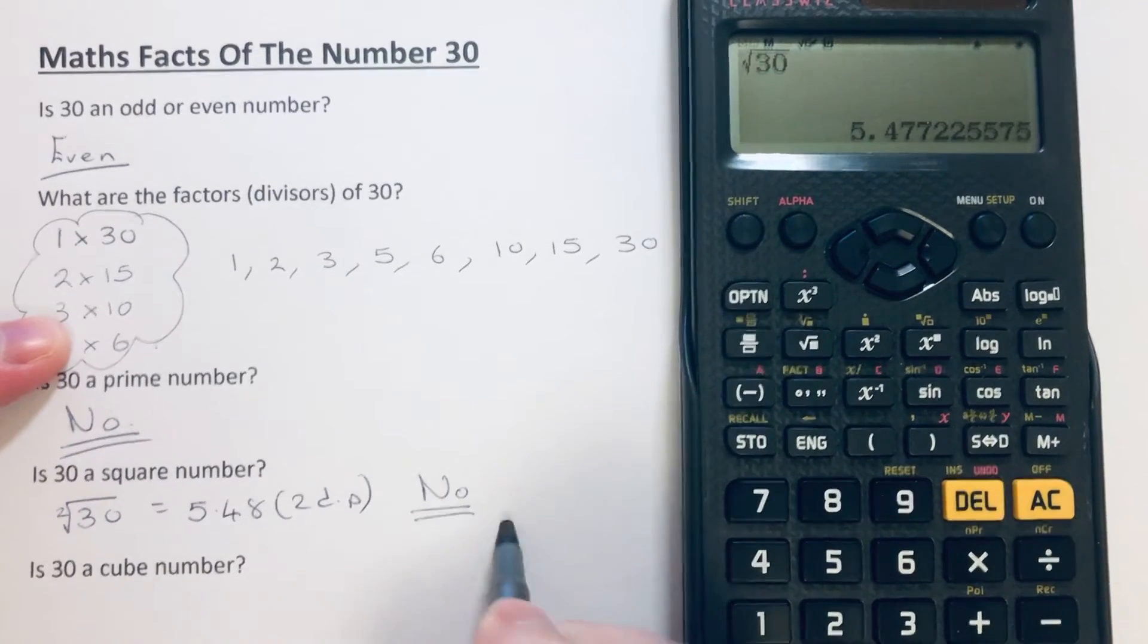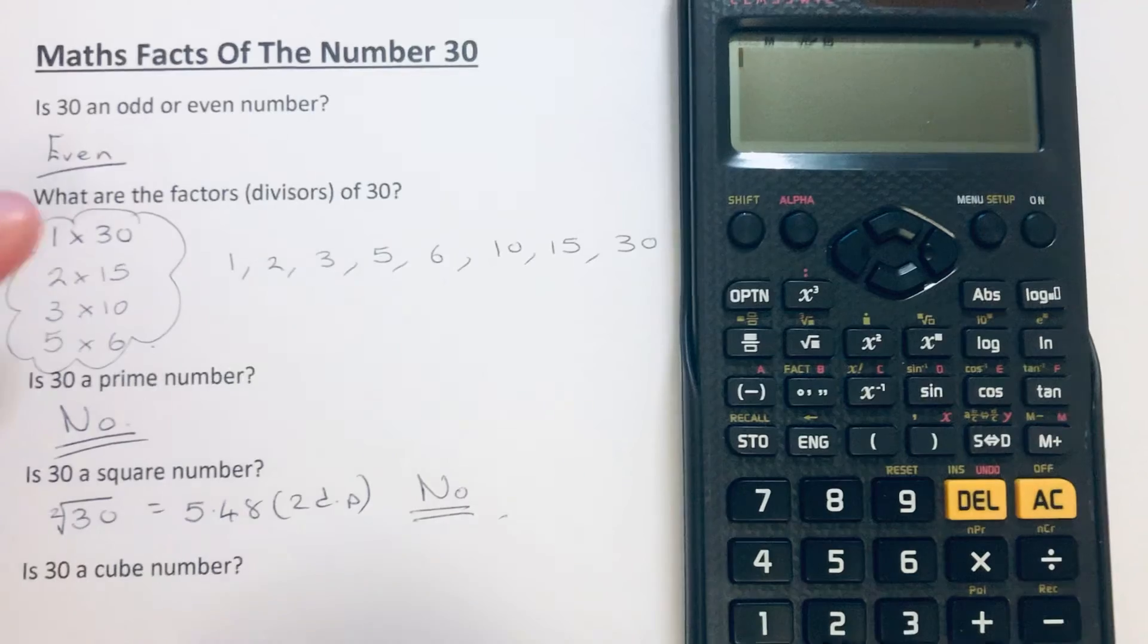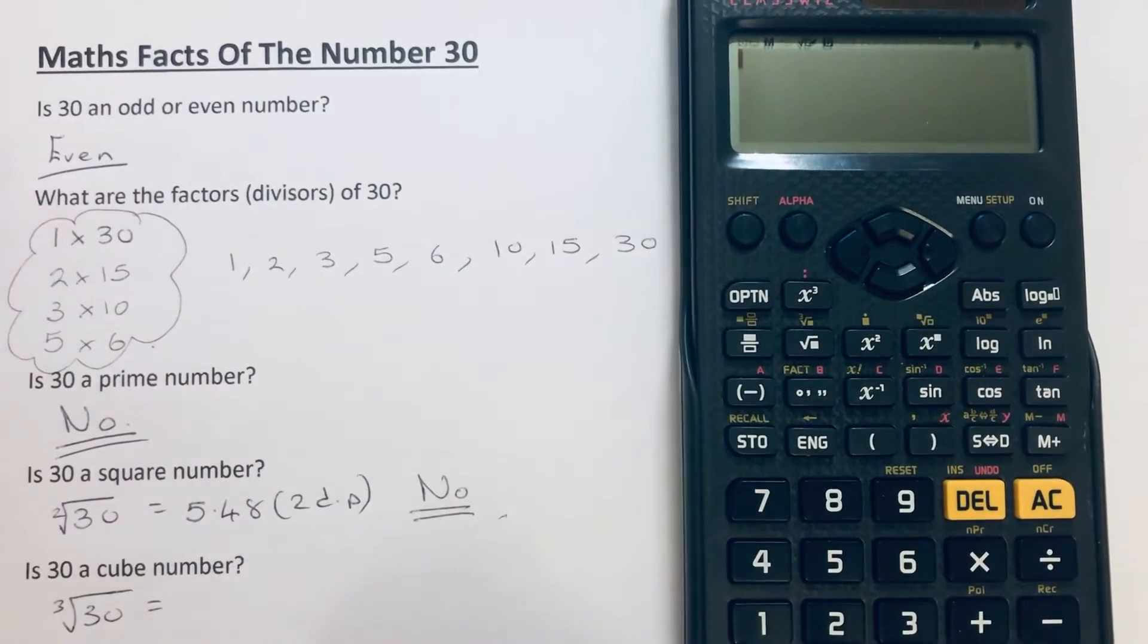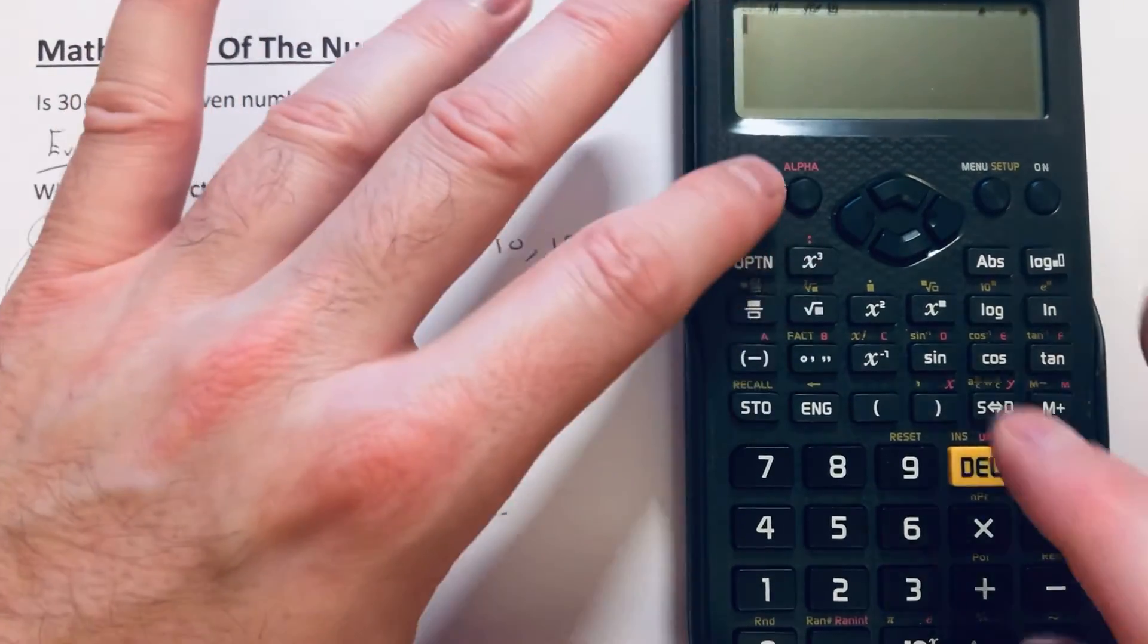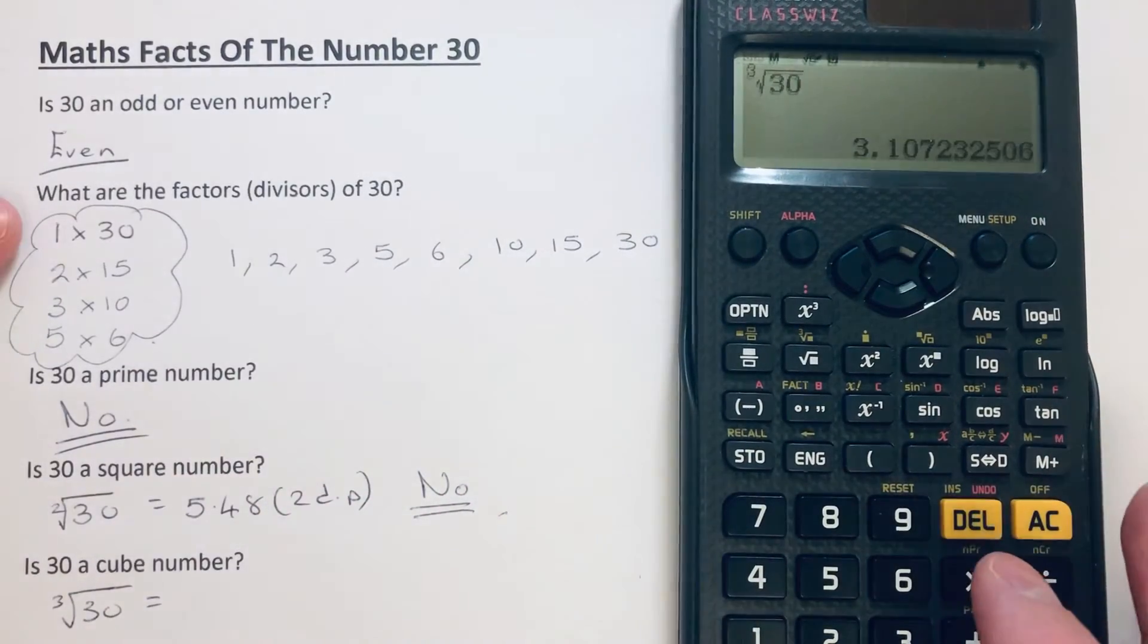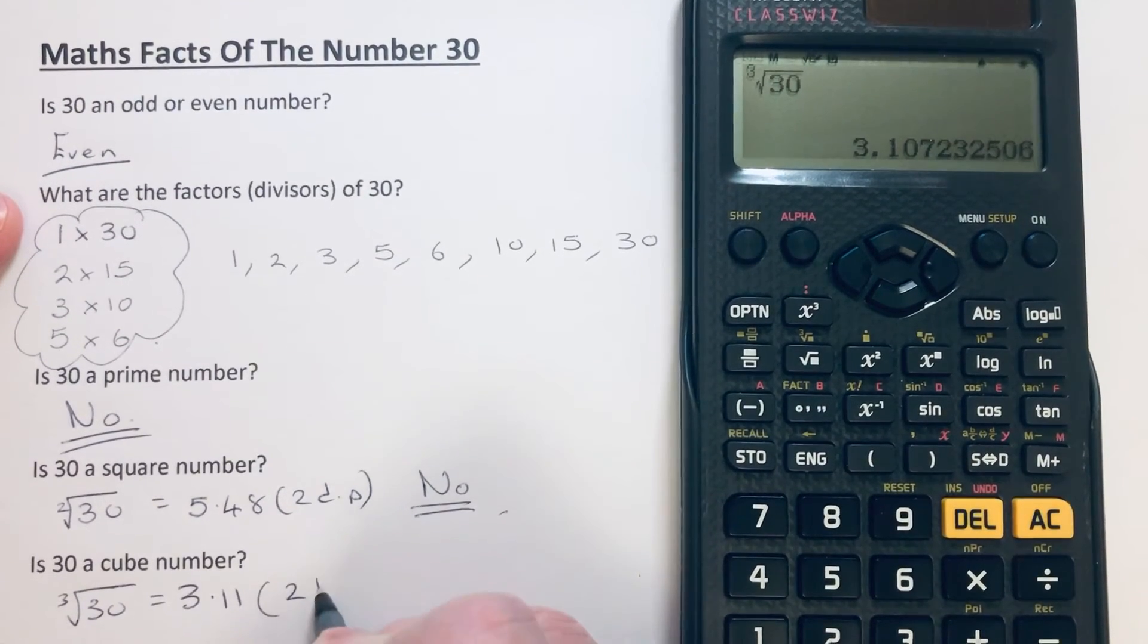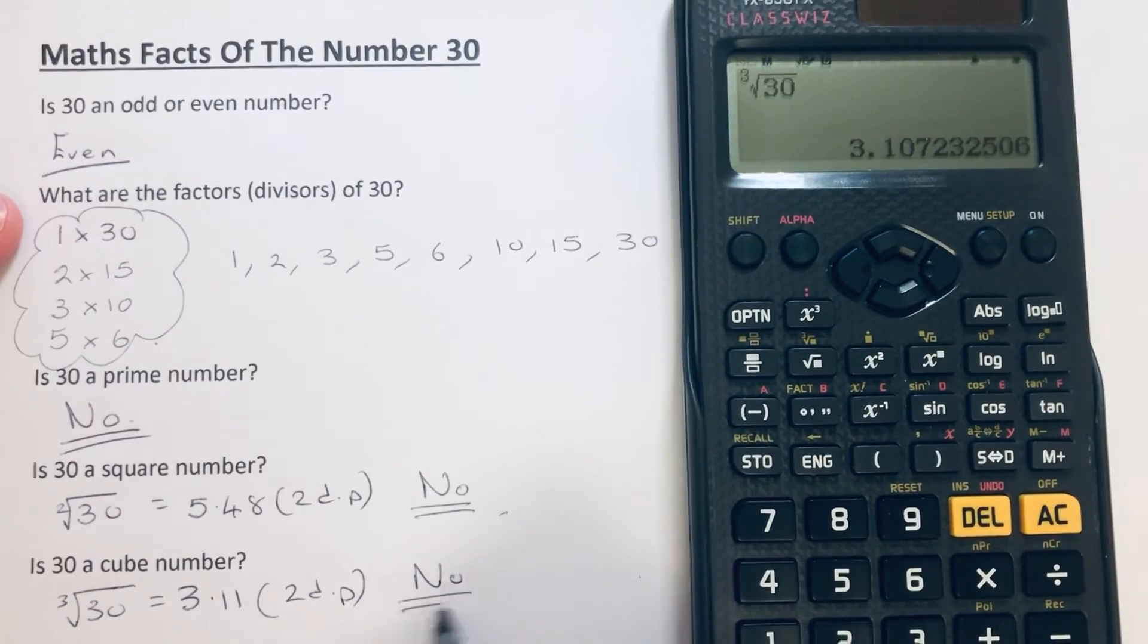So is 30 a cube number? Well, if it's a cube number, we should be able to cube root 30, and if it comes out as a whole number, then it will be a cube number. The cube root of 30 is 3.11. So again, we've got a decimal, so the answer to this is no.